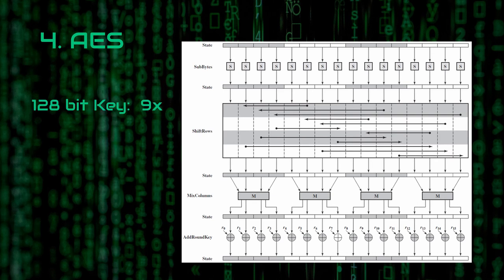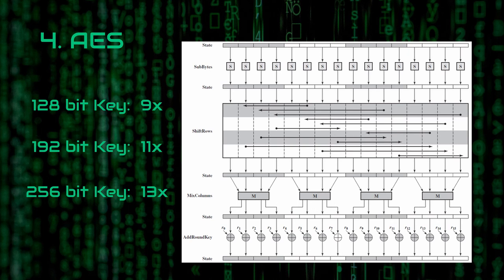If we have picked the 128-bit version, we repeat it 9 times; the 192-bit version 11 times; and the 256-bit version 13 times. AES encryption is obviously a very detailed topic to explain in a short video, so I will provide some useful links in the description so you can understand the concepts in detail. I hope you find this video helpful, and if that is the case, please make sure to hit the like button and consider subscribing. See you next time. Take care.